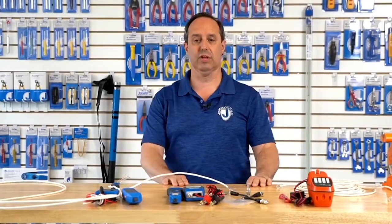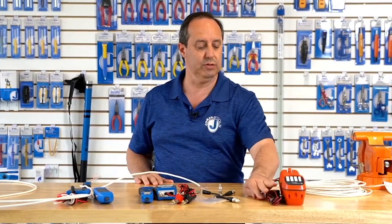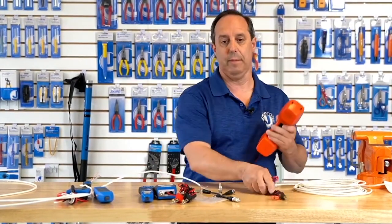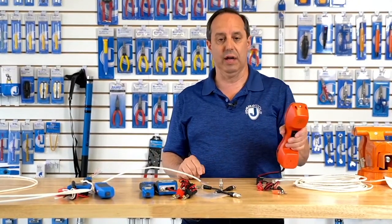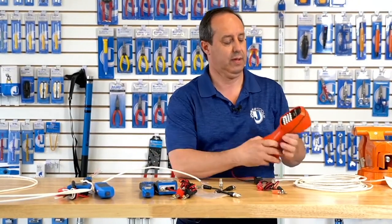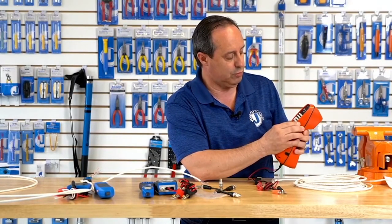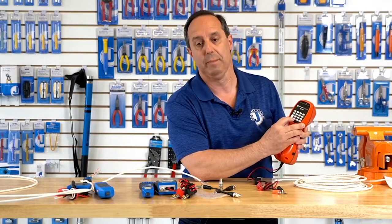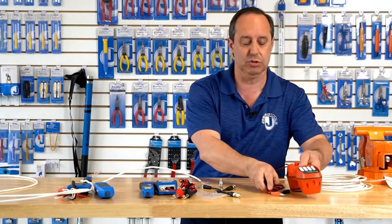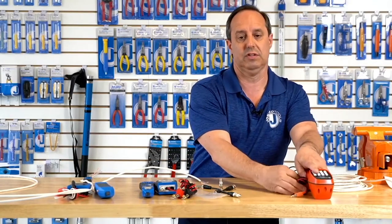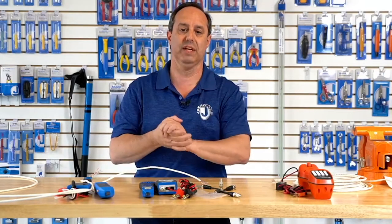Okay, last I want to show you is our TBS-100 butt set. It's a basic butt set that allows you to connect up to the phone and do on hook, off hook, basic dialing. You can dial out, pause, redial, and switch from pulse to tone. We have a couple videos that will show you the TBS-100 in action.